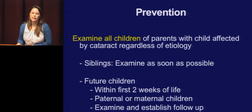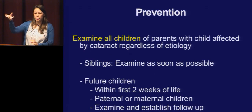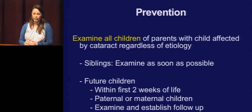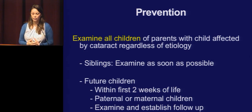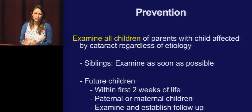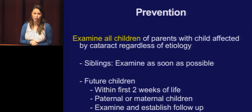Any child that has a pediatric cataract — we examine all children by those parents. If you know the genetic inheritance is carried through a certain parent, you'll examine those kids. All siblings and future siblings by either parent need to be examined within the first two weeks of life. Any future children of the patient also need to be examined within the first two weeks by a pediatric ophthalmologist. Establish follow-up for long-term care, because some forms like posterior lenticonus may not have a cataract at birth.